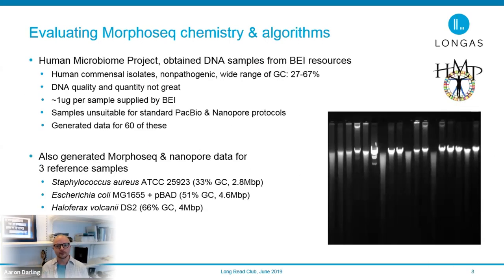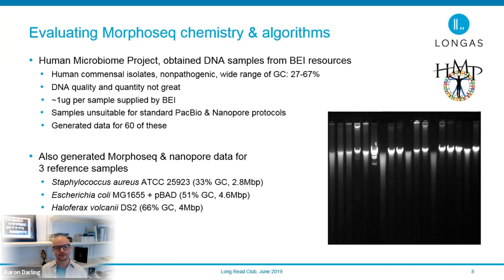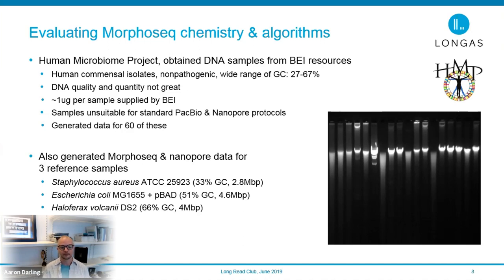To evaluate this technology, we used a set of samples from the Human Microbiome Project. An organization called DEIRESOURCES ships DNA prepped from these reference samples. When they arrived in our labs in Sydney, QC showed they had probably suffered X-rays or degradation in transit — they didn't look great on the gel, showing smearing. This is not the type of high molecular weight sample you'd ordinarily put into a standard PacBio or Nanopore protocol, but we were able to generate MorphoSeq data from them. We also applied MorphoSeq to reference samples we grew locally so we could generate Nanopore data for comparison.